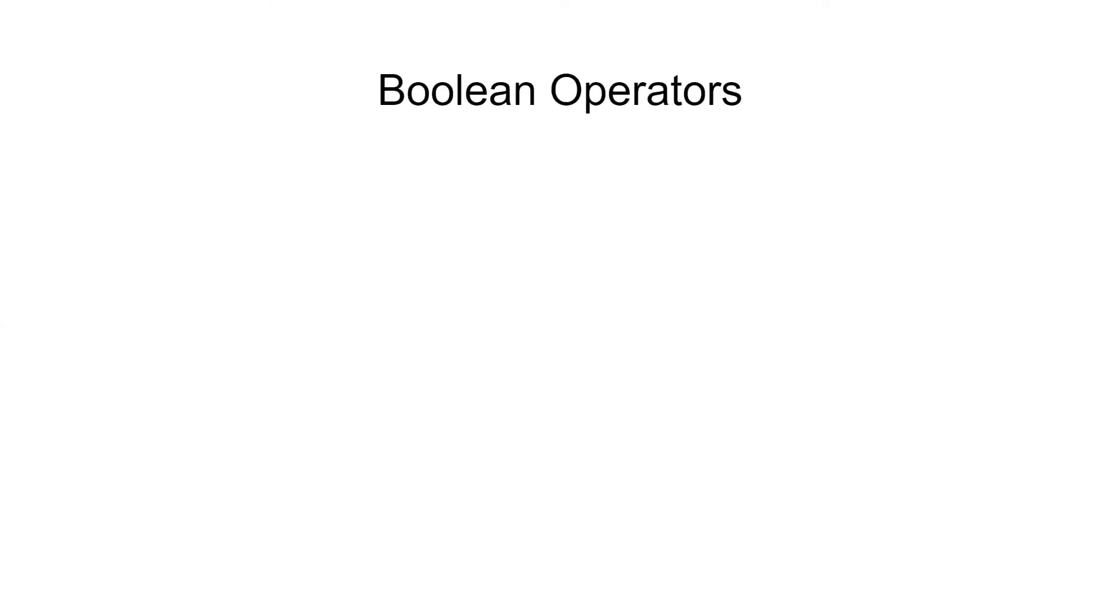There are three Boolean operators: AND, OR, and NOT. We'll go over each of them so you know what they do and how to use them.